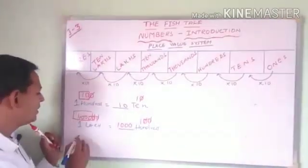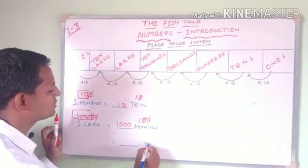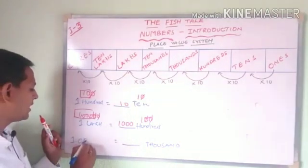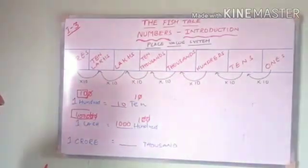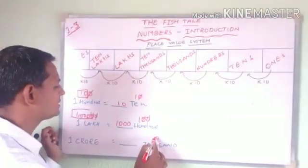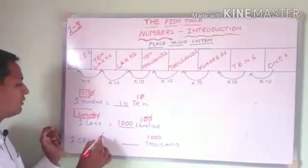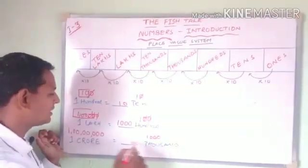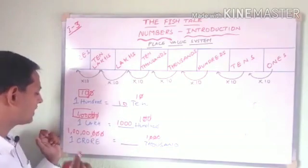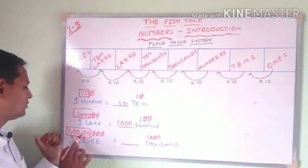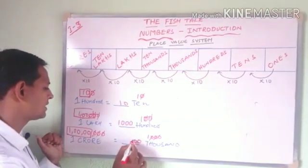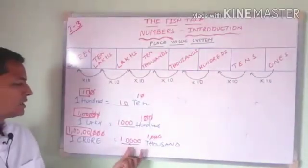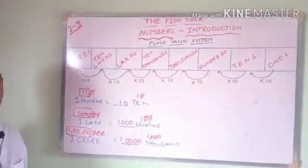Now, how many 1000 rupee notes will make 1 crore? 1000 has 1s, 10s, 100s, 1000s — that's 3 zeros. Crores has 1s, 10s, 100s, 1000s, 10,000s, lakhs, 10 lakhs, crores — that's 7 zeros. Cancel the 3 zeros of 1000 against 3 zeros of crore — the number left has 4 zeros and a 1, which is 10,000. So 10,000 thousands make 1 crore.